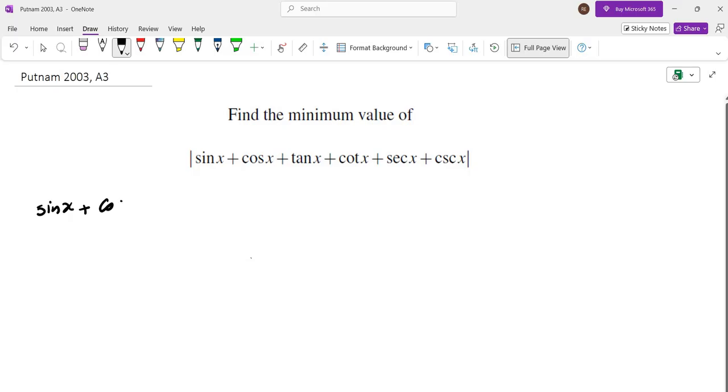So we get sine of x plus cosine of x, sine of x over cosine of x, cosine of x over sine of x, one over cosine of x, and then one over sine of x.